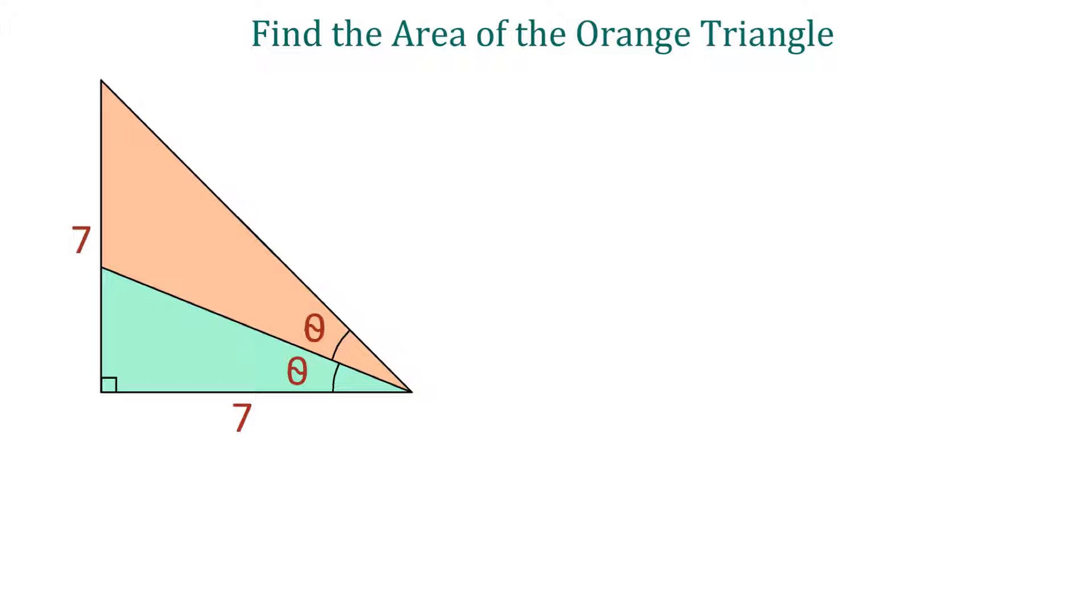To solve this problem, first we will find the area of the isosceles right triangle. Then we will find the area of the green triangle. Then we will subtract these two areas to find the area of the orange triangle.